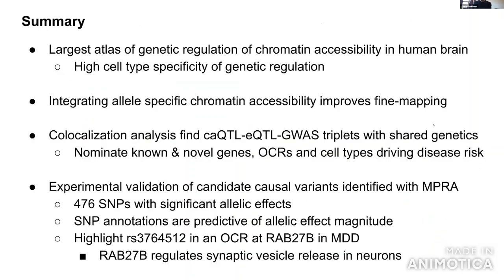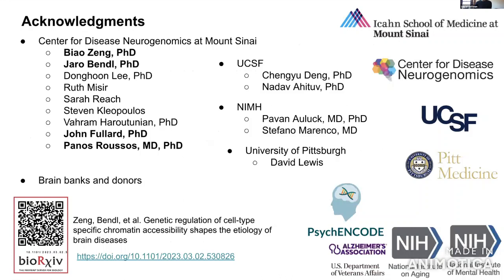To wrap up: this is the largest atlas of genetic regulation of cell-type-specific chromatin accessibility in the brain. Integrating allele-specific signals substantially improves fine mapping. Co-localization between multiple molecular assays nominates known and novel genes, specific OCRs, and specific cell types in disease risk. We performed experimental validation and nominated RAB27B in the biology of major depression — a gene known to regulate synaptic vesicle release in neurons. Thank you to all co-authors including Panos Roussos and collaborators.